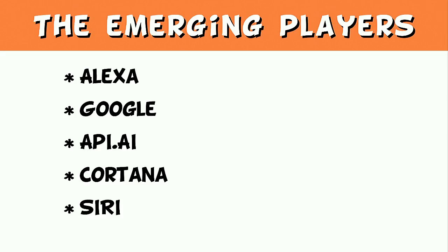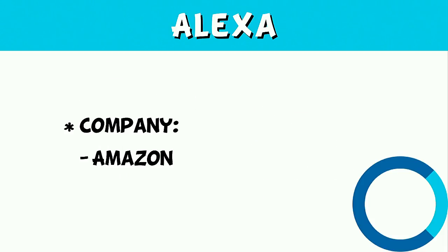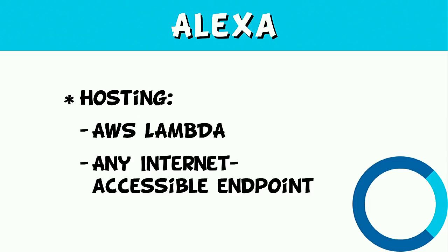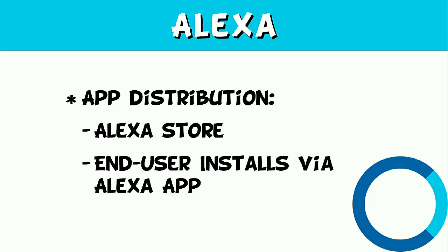The emerging players in this space are Alexa, Google, API.AI, Cortana, and Siri — those are just the major ones. Let's start with Alexa. The purpose of Alexa is to let you build custom voice skills for Alexa-enabled devices, or integrate Alexa into your connected product. The company behind it is Amazon, and the hosting options include AWS Lambda or any internet-accessible endpoint. The devices that Alexa skills support are any device in the Echo family. The Kindle Fire is coming with Alexa enabled, and any other Alexa-enabled connected device. Custom skill app distribution happens in the Alexa store — the end user installs it via the Alexa app.